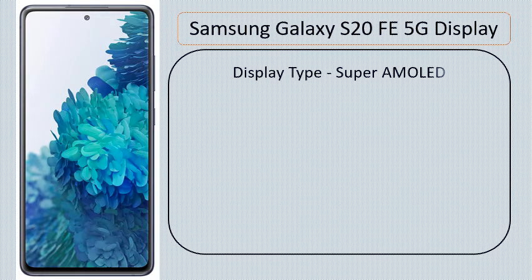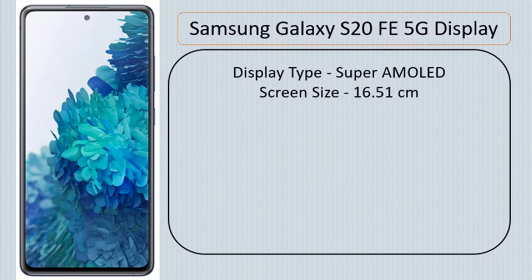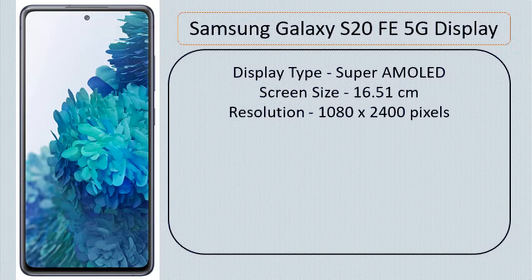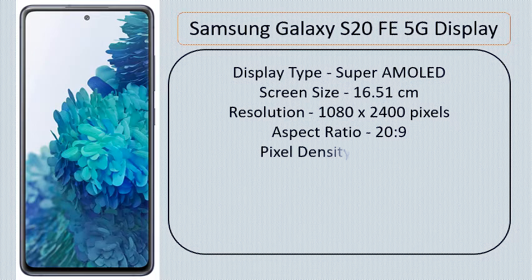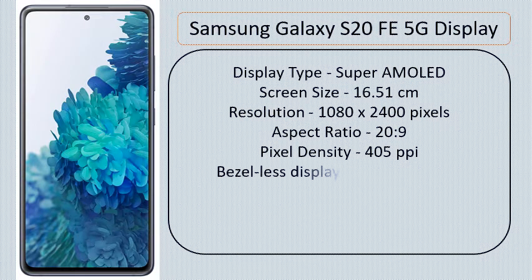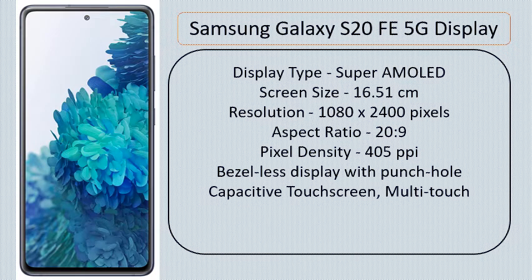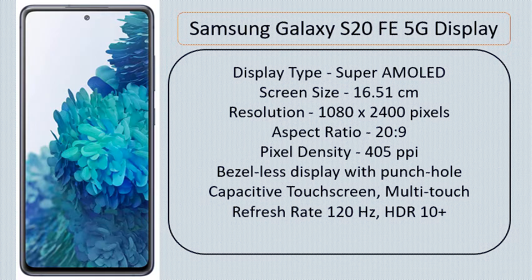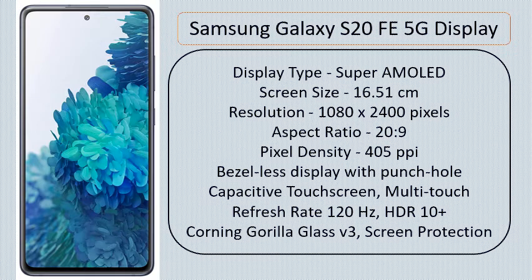Samsung Galaxy S20 FE 5G Display. Display Type: Super AMOLED. Screen Size: 16.51cm. Resolution: 1080x2400 pixels. Aspect Ratio: 20:9. Pixel Density: 405ppi. Bezel-less display with punch hole. Capacitive Touchscreen, multi-touch. Refresh Rate: 120Hz, HDR10 Plus. Screen Protection: Corning Gorilla Glass V3.